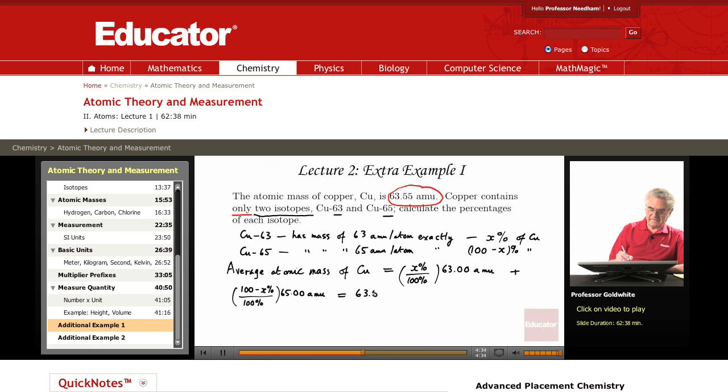Let's clear that up: 0.6300x plus... amu's cancel out throughout. As you can see, plus 65.00 minus 0.6500x equals 63.55.